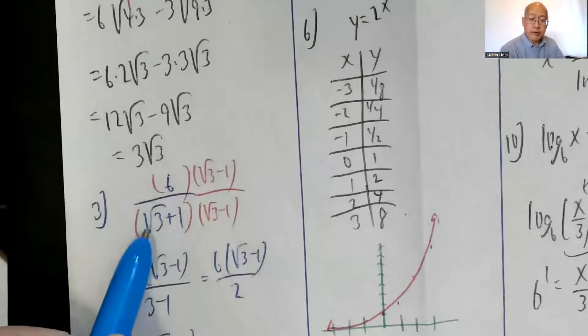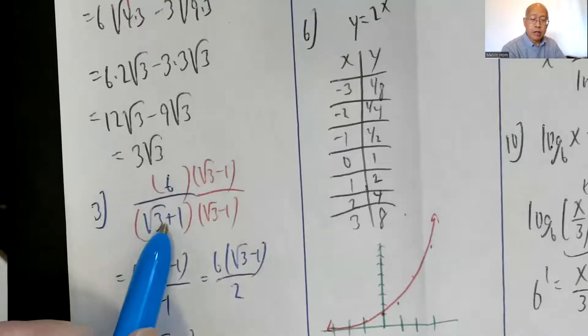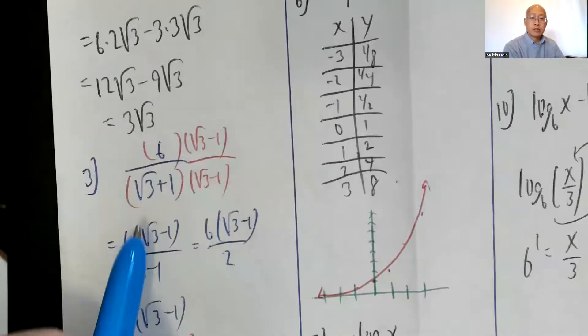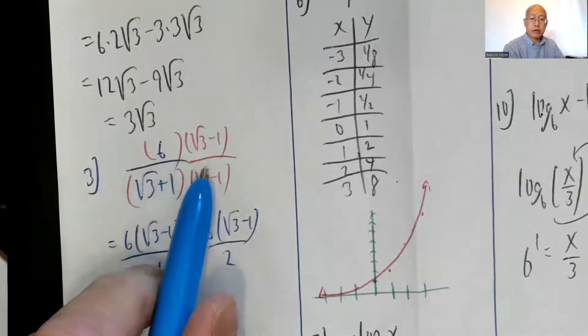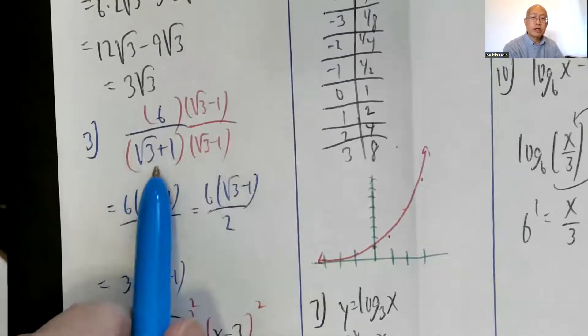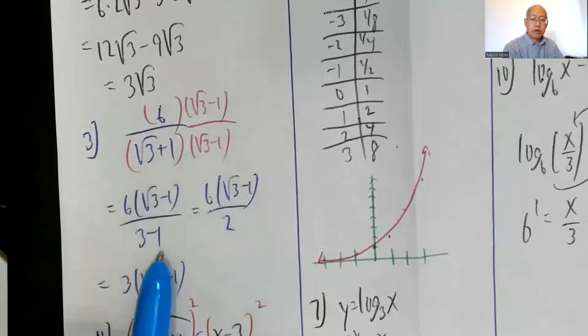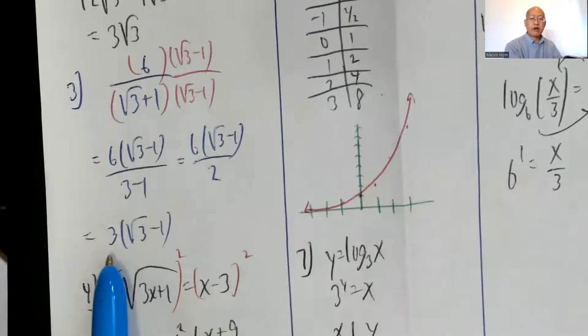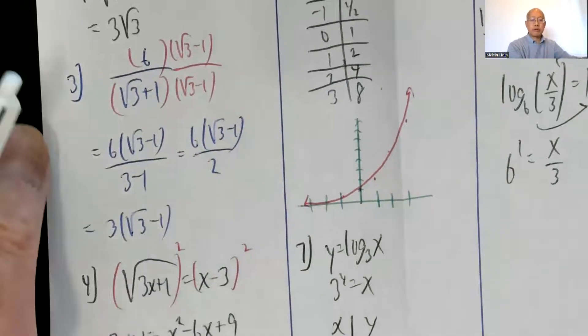Number 3: Multiply by the conjugate of the denominator. I see radical 3 plus 1, so I multiply the top and bottom by radical 3 minus 1. So the numerator is 6 times radical 3 minus 1. The denominator is a squared minus b squared. Radical 3 squared is 3, minus 1 squared is 1. 3 minus 1 is 2. Cancel the 6 with the 2. So the final answer is 3 times radical 3 minus 1.